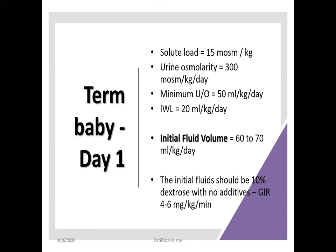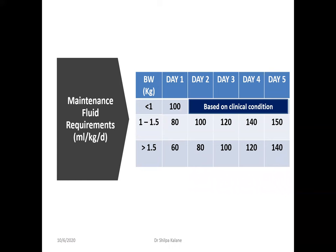For babies less than 1 kg, start at approximately 100 ml/kg/day; 1–1.5 kg, start at 80 ml/kg/day; more than 1.5 kg, start at 60 ml/kg/day. Increase fluid requirement by approximately 20 ml/kg/day each day, reaching a maximum of 150 ml/kg/day. These are rough guidelines that may change based on the baby's underlying condition. Sodium and potassium are generally added to IV fluids after 48 hours — sodium at 3 mEq/kg/day and potassium at 2 mEq/kg/day.